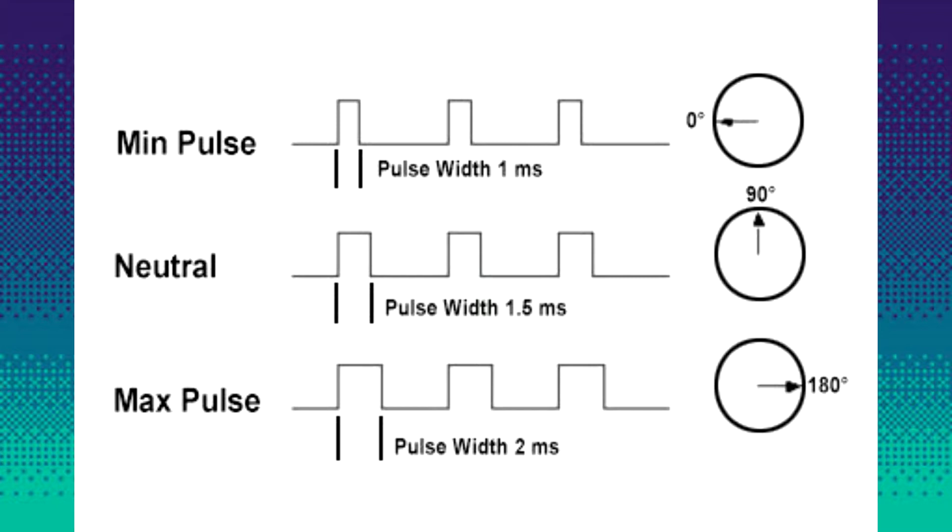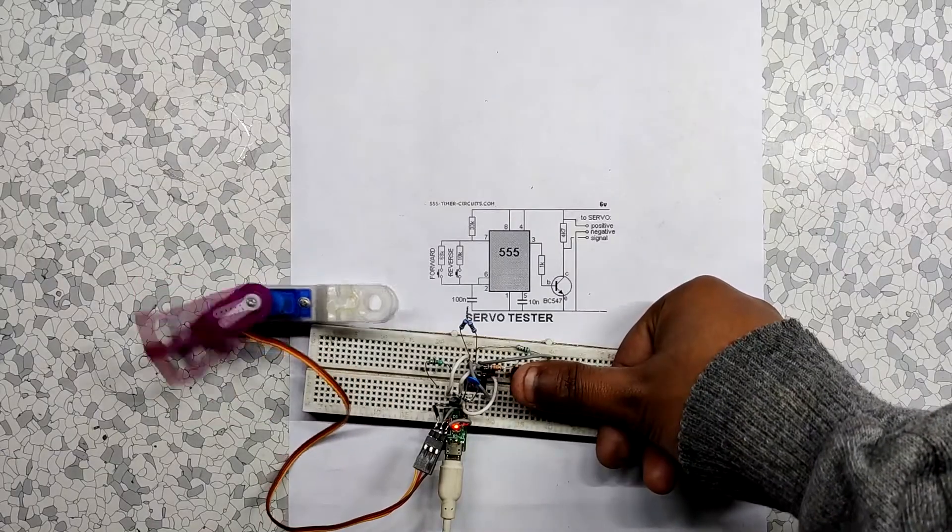A servo can usually only turn 90 degrees in either direction for a total 180 degree movement. The PWM sent to the motor determines the position of the shaft, and based on the duration of the pulse sent via the control wire, the rotor will turn to the desired position. In this setup, I am basically increasing the pulse width and decreasing it to move the servo forward and backwards.